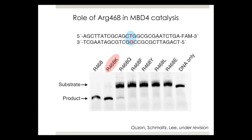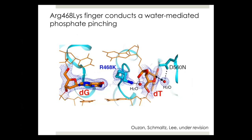So what's going on? Why does the lysine mutant show full activity whereas other mutants did not? To understand this, we solved the structure. In the lysine finger structure, lysine shows water-mediated phosphate pinching to the substrate thymine. However, this structure does not give much insight into the unique role of the arginine finger.